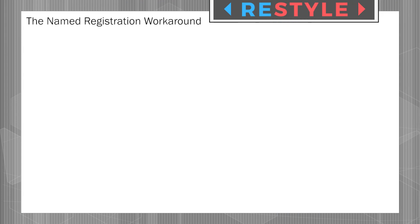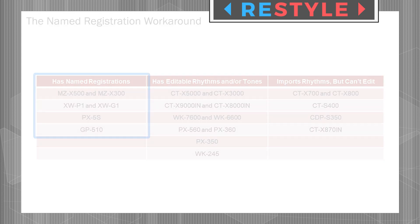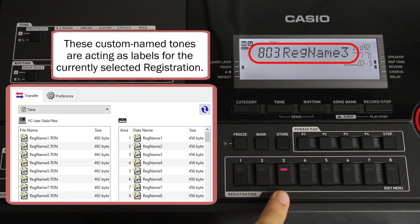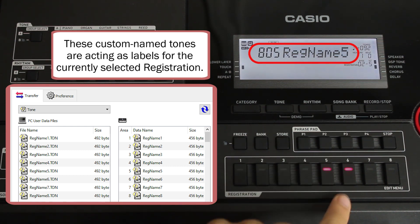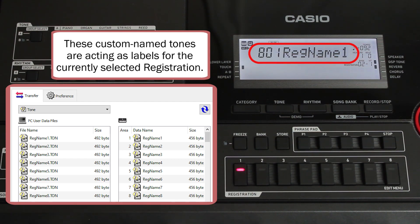The ability to name user registrations is an extremely common feature request among Casio users, but we've yet to see it implemented outside of pro-level models like the MZX series or the PX5S. Fortunately, there is a fairly simple workaround that allows you to achieve more or less the same result, but up until now it's only been possible on Casios that have onboard tone or rhythm editing capabilities.